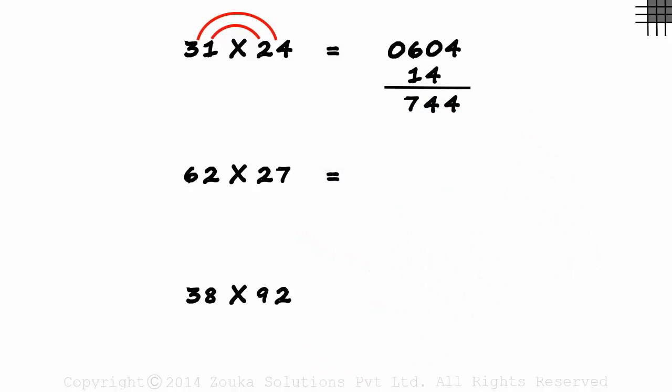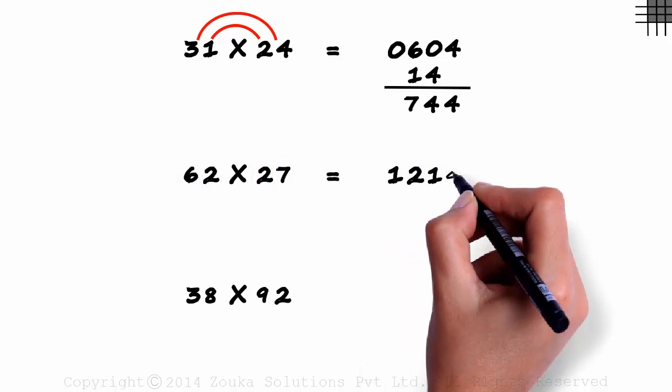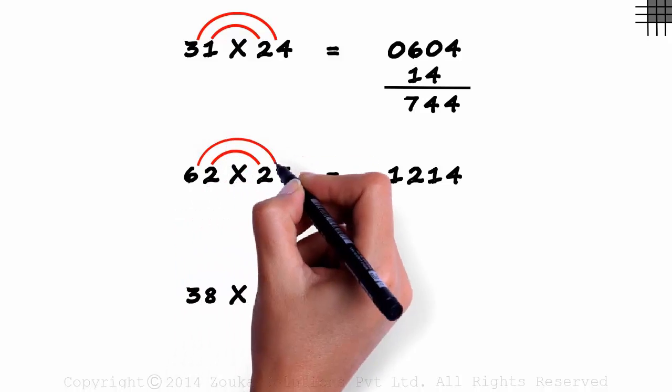Okay next, 6 times 2 is 12, 2 times 7 is 14, and 4 plus 42 is 46.